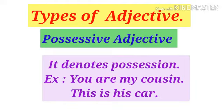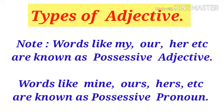The eighth and last kind is possessive adjective, which denotes possession or belongingness. For example, 'You are my cousin' — 'my' is the possessive adjective. 'This is his car' — 'his' is the possessive adjective. An important note: there is a difference between possessive adjective and possessive pronoun. Words like 'mine', 'ours', and 'hers' are often confused with possessive adjectives.